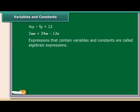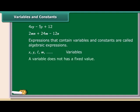Expressions that contain variables and constants are called algebraic expressions. The letters such as X, Y, L, M and so on are used to denote variables. So a variable can take various values and its value is not fixed. On the other hand, a value that does not change is a constant.